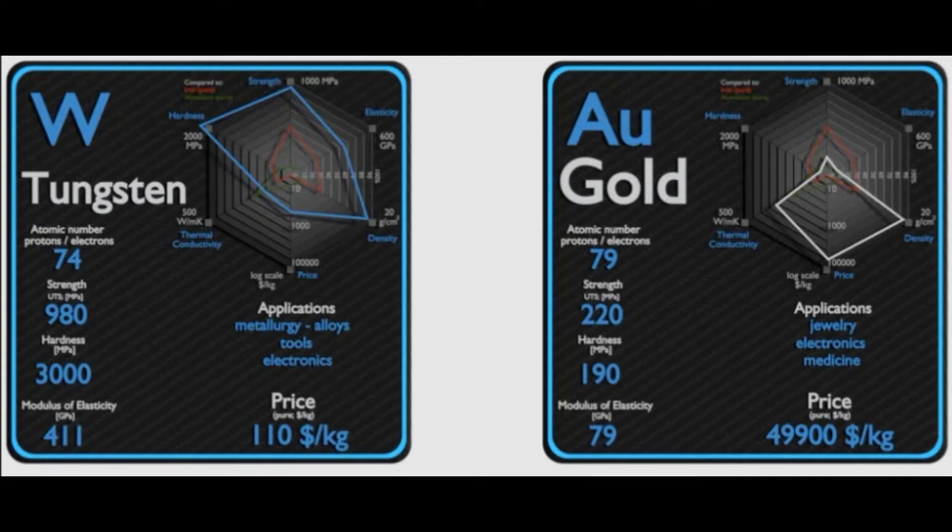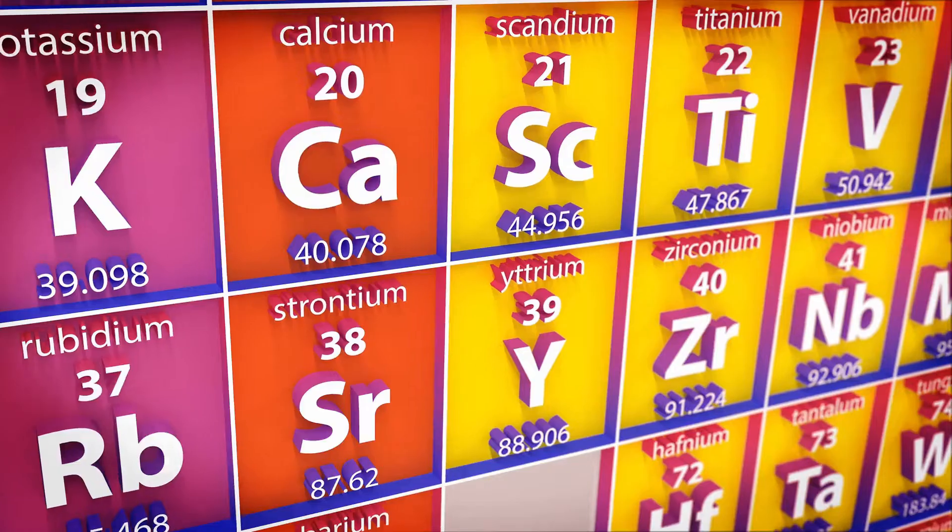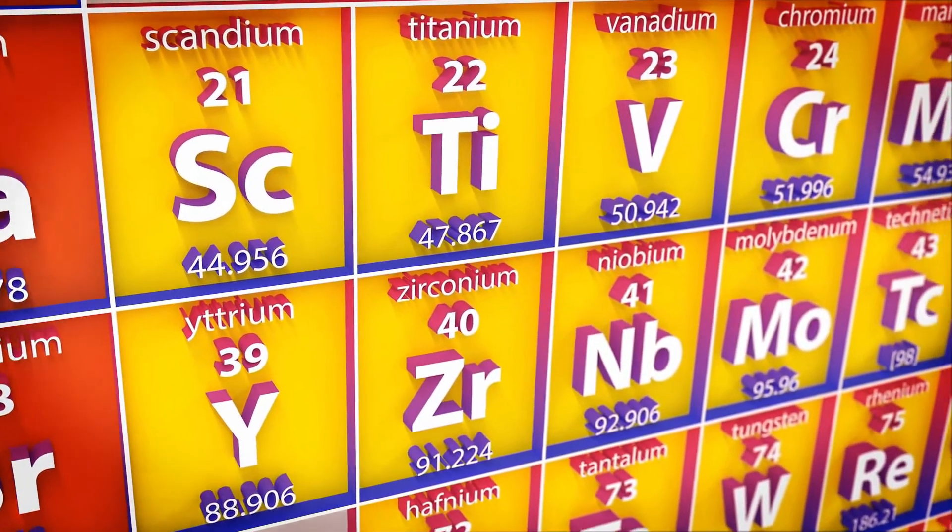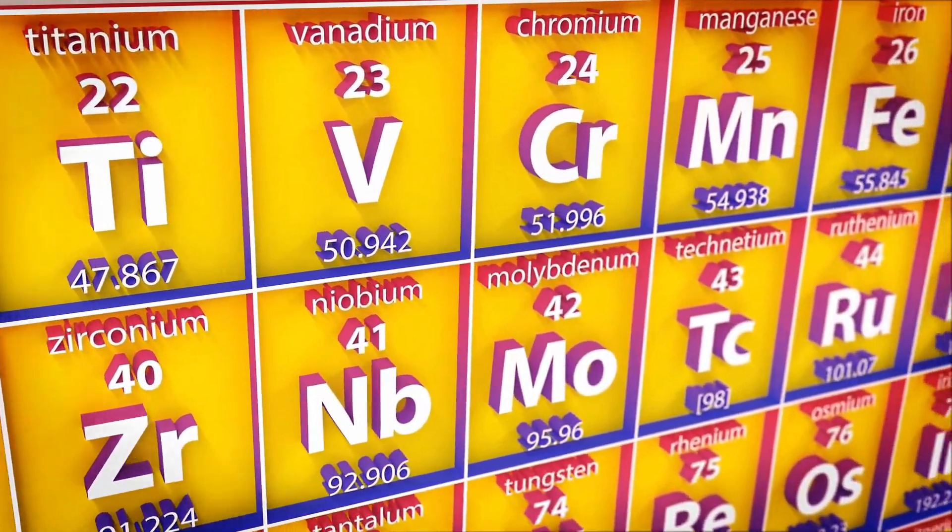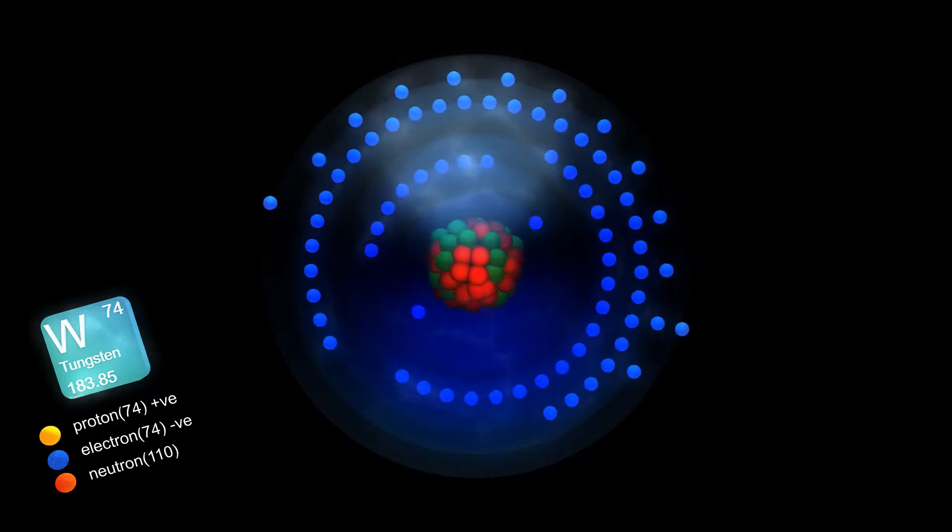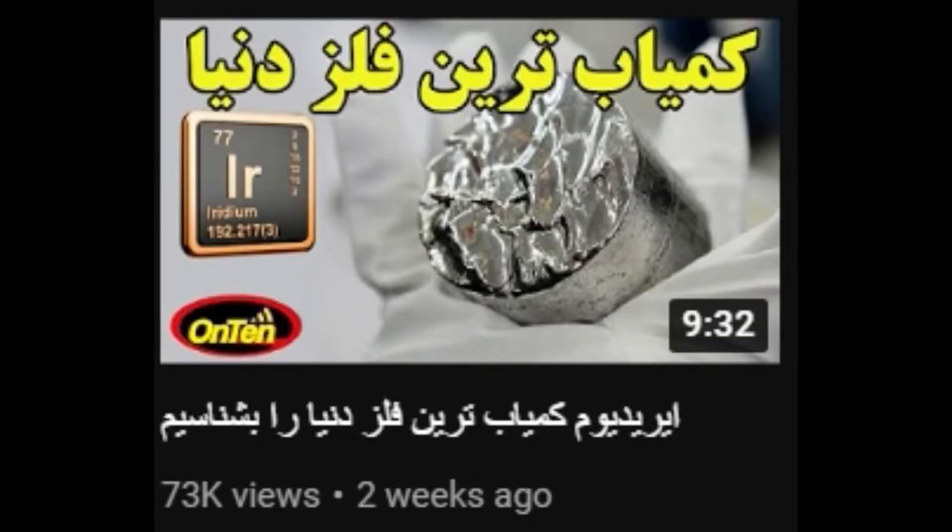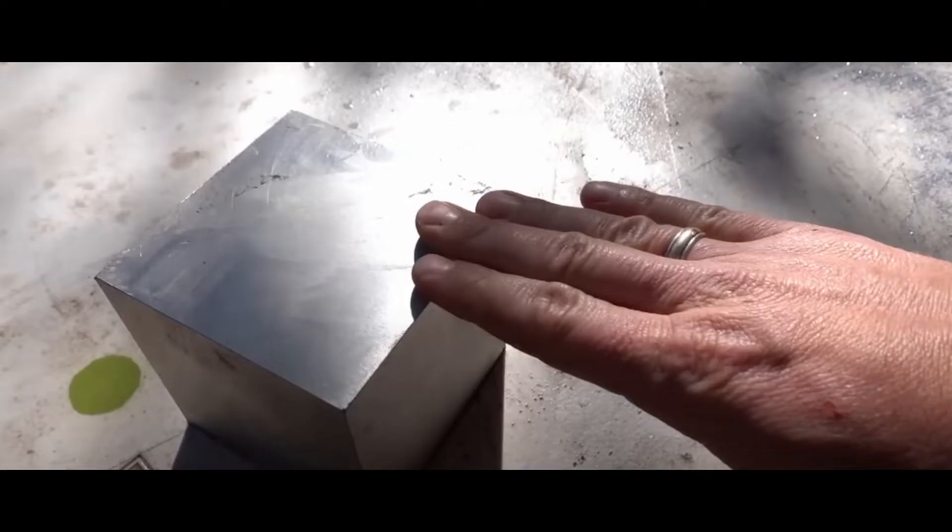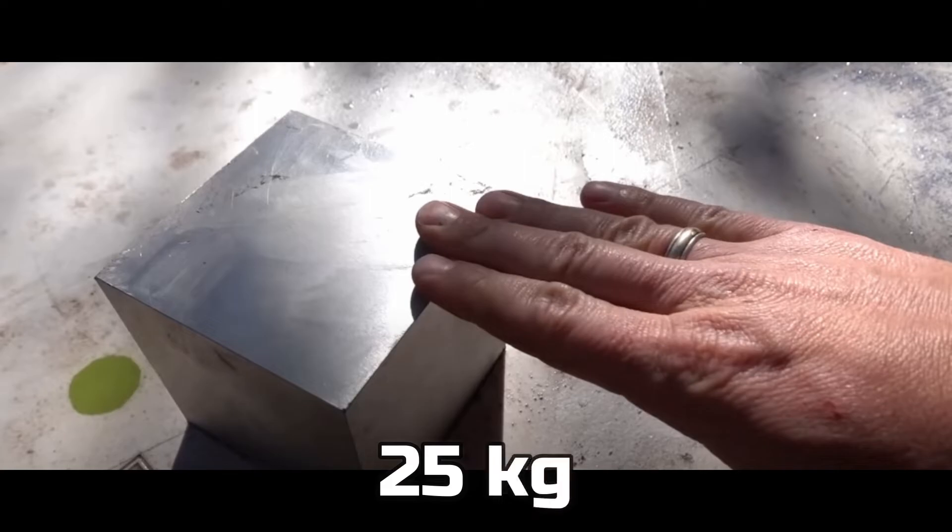Just like we said, tungsten is like gold and it's very heavy. Every element we talk about, we say the price. And tungsten is about $6 an ounce, so it's not too expensive. If you remember, Iridium costs about $6,000 an ounce. It's good to know that this tungsten piece is about 25 kilos.